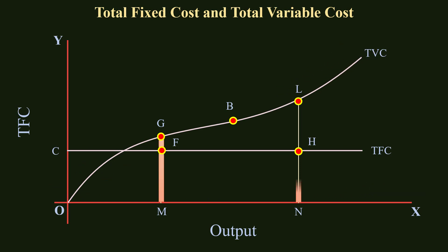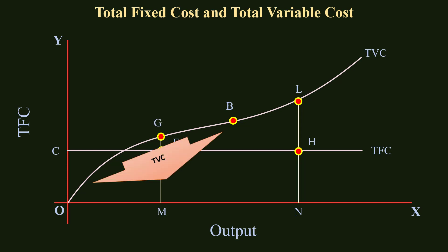Total Variable Cost at outputs M and N are MG and NL respectively. NL is greater than MG. Though Total Variable Cost increases, the rate of increase is not uniform. In the segment OB, the Total Variable Cost Curve is concave downwards because Total Variable Cost is increasing at a decreasing rate. Here, the Law of Increasing Returns operates.